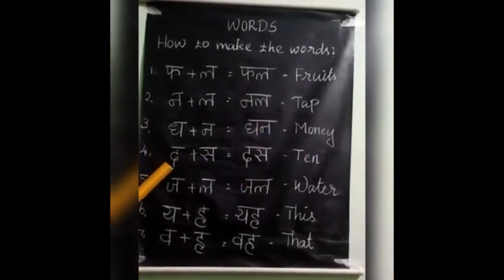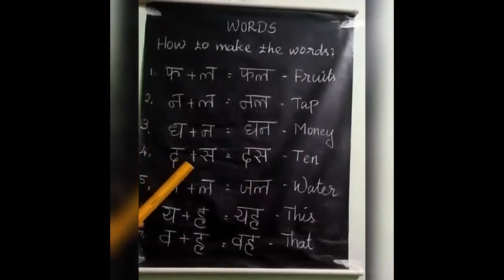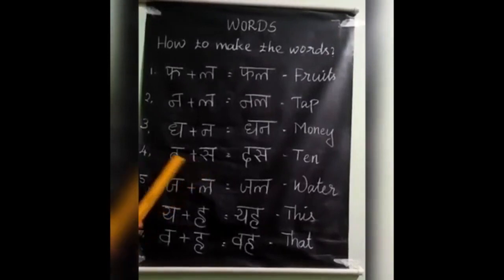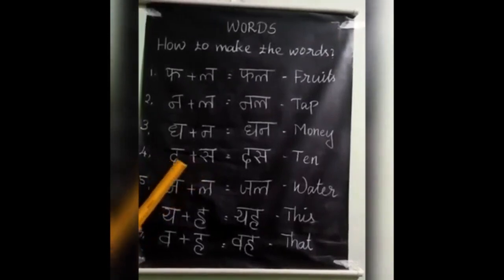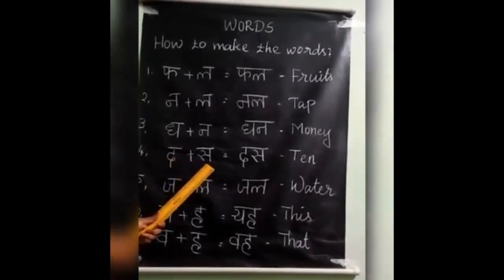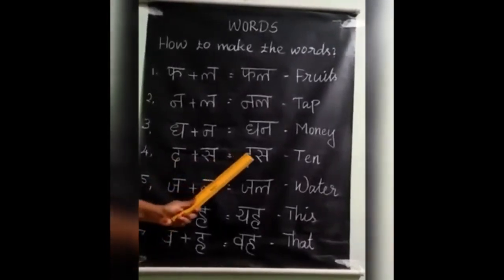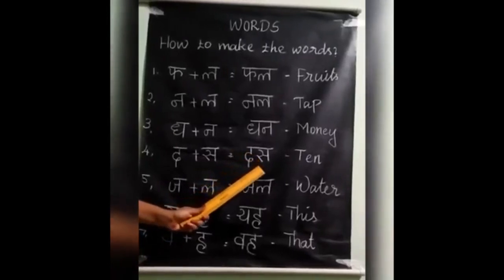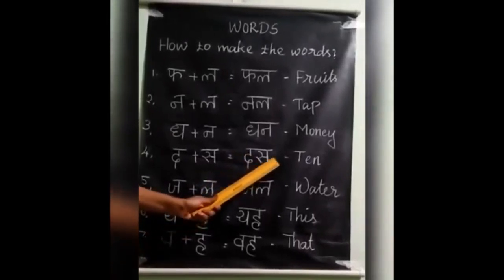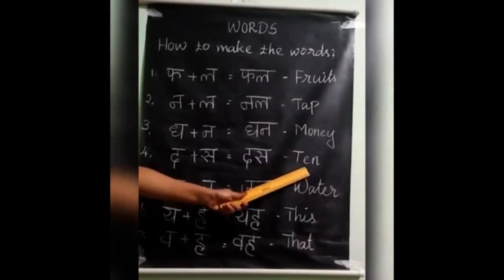The next one. Dha plus sa. Dha plus sa is equal to das. How to pronounce this? Das. Das means number ten.